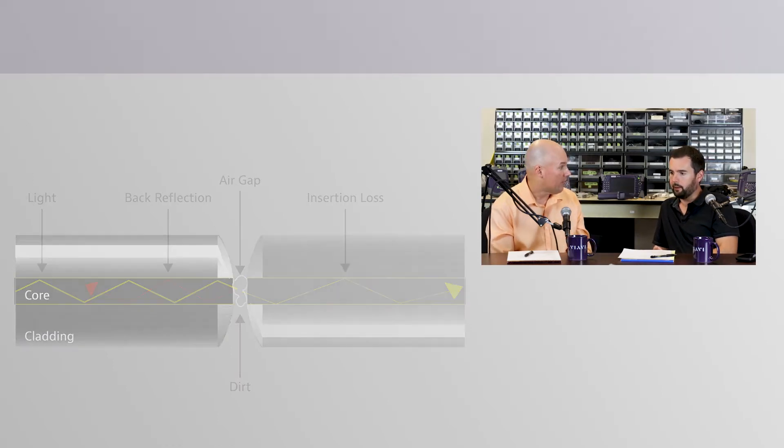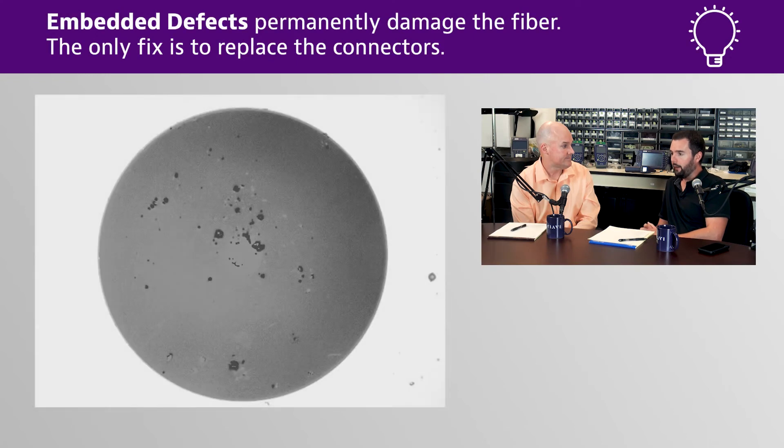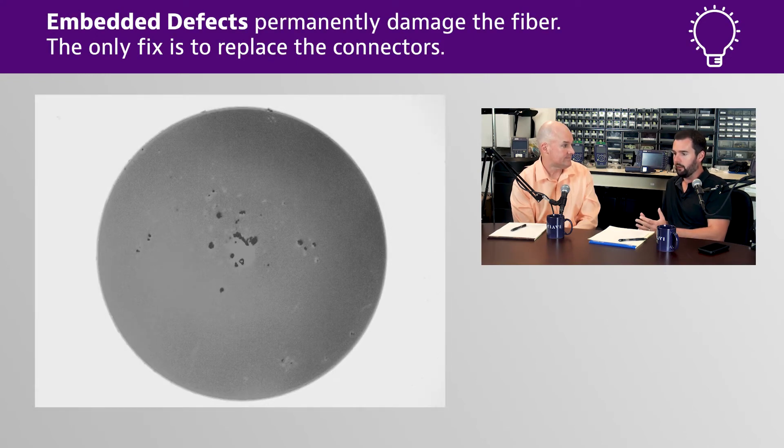Tyler, what do you see from an inspection standpoint with dust — what happens to the end face if you start mating and then try to clean retroactively? Well, you find it doesn't come off. Somebody runs the trace, sees a problem, goes to clean it, and it just doesn't come off — it's embedded in there. Now they've got a bigger problem; they're going to have to change that connector, get out the fusion splicer, and shut everything down for a day or so.